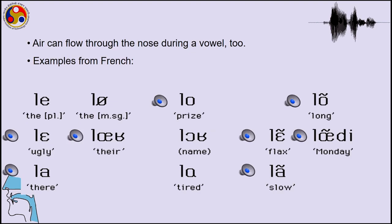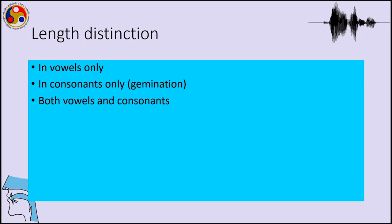Regarding nasalized vowels, in some languages vowels can be nasalized. We can hear this contrast from French — the oral vowel versus the nasal vowel, showing the difference between oral and nasal in French. Another important property is length, seen in vowels and consonants — gemination — and there are languages which have both vowel and consonant lengthening; Japanese is one such example.